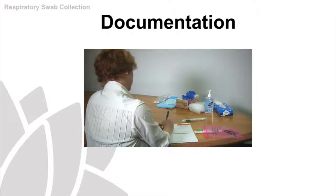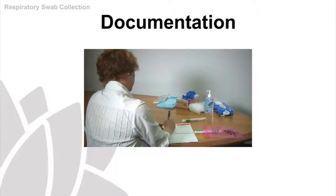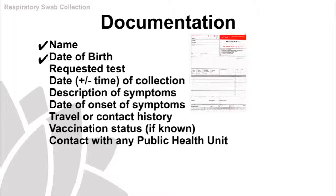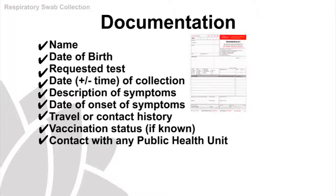The next step is to collect as much information as possible on the patient. This is documented on the specimen request form. On the request form, you will need to document the patient's name, date of birth, requested test, date of collection, description of symptoms, date of onset of symptoms, travel or contact history, vaccination status if known, and any contact with a public health unit.